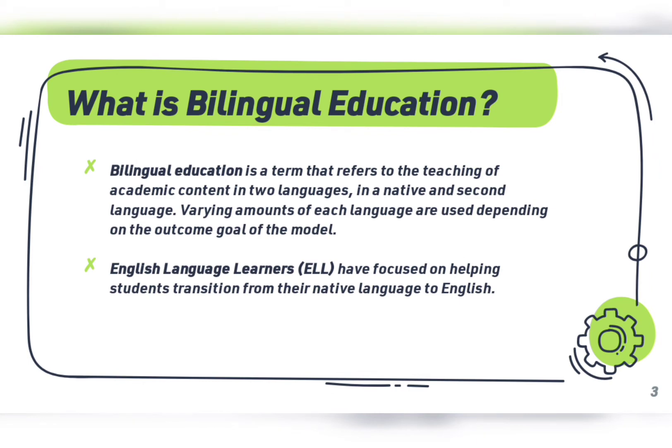What is bilingual education? Bilingual education is a term that refers to the teaching of academic content in two languages — a native and a second language. Varying amounts of each language are used depending on the outcome goal of the model. There are different program models that can be used in bilingual education.